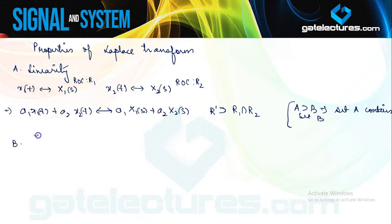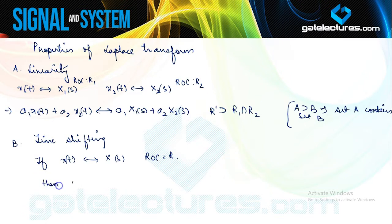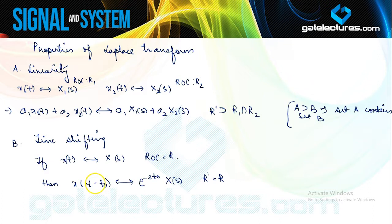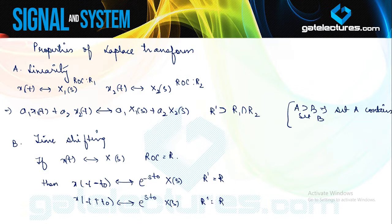The next property is time shifting. If x(t) has Laplace X(s) with ROC R, then shifting the signal by −T₀ in the time domain gives e^(−sT₀)·X(s), with ROC remaining the same. If the shift is +T₀, the result is e^(+sT₀)·X(s), ROC still unchanged, since we are not altering the argument of the signal.